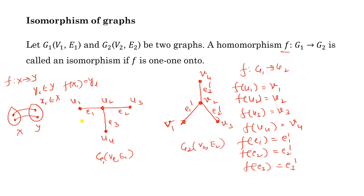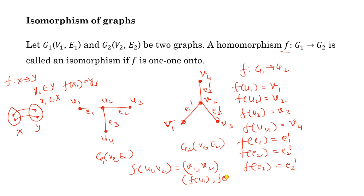For the homomorphism condition, take edge e1 = (u1, u2). Then f(e1) = e1 dash = (v1, v2), where v1 = f(u1) and v2 = f(u2). So the condition f(u1, u2) = (f(u1), f(u2)) is satisfied. Thus, this mapping is an isomorphism.